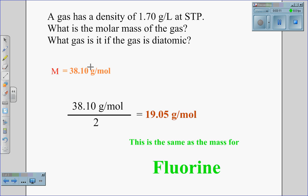To find what gas it is, we have to realize that a diatomic gas has two atoms. Therefore, we must take the molar mass and divide it by two, which gives us an actual mass of 19.05 grams per mole. When we look for this mass on the periodic table, this mass is the same as fluorine gas. Therefore, our gas in this unknown density is fluorine.